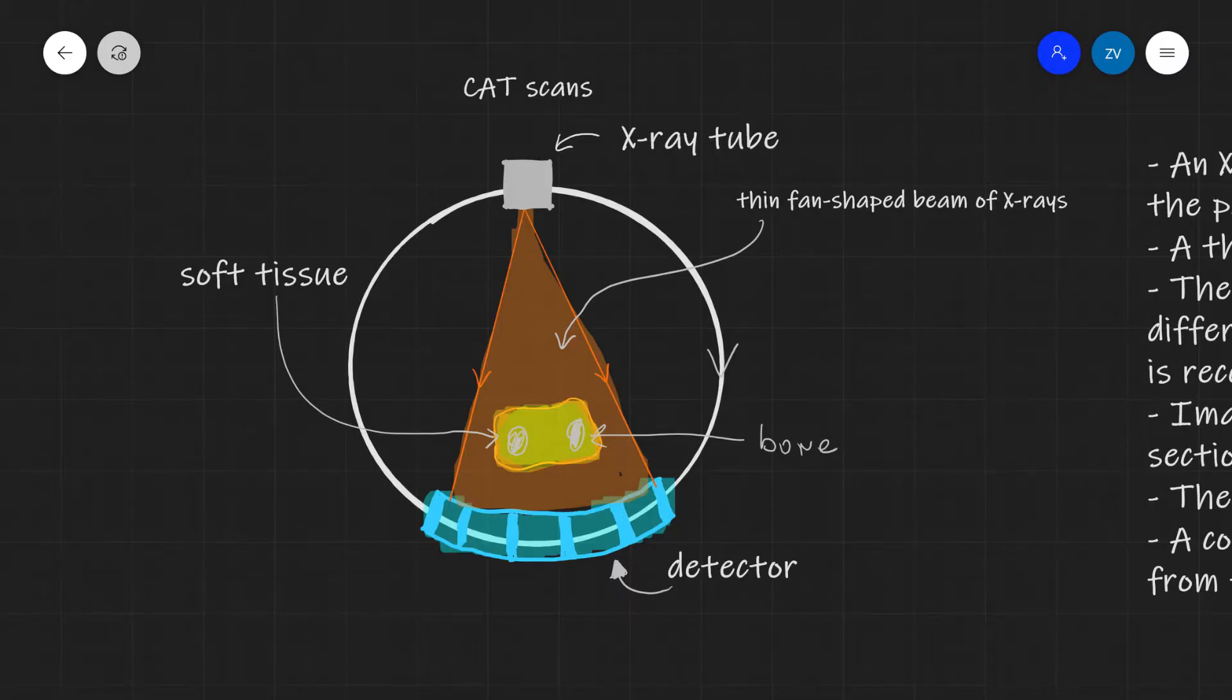Now most of us are really familiar with x-ray imaging and this is quite a quick and cheap way to examine the internal structures of a patient. However, what we're going to be looking at today is a CAT scanner. Now how does a CAT scanner work?